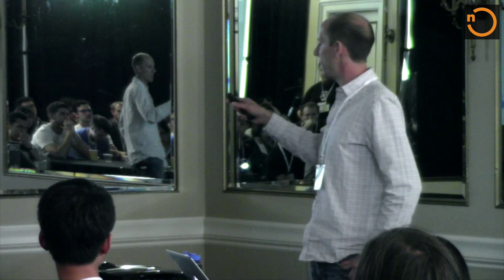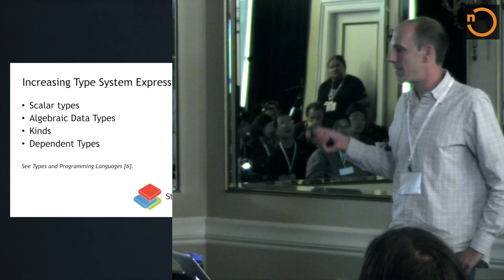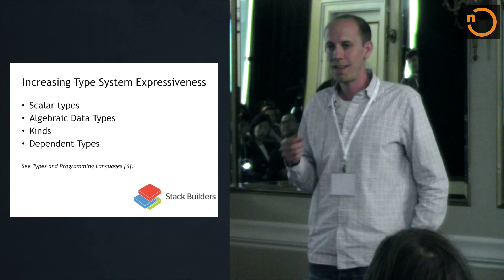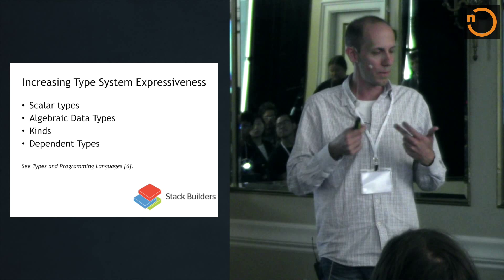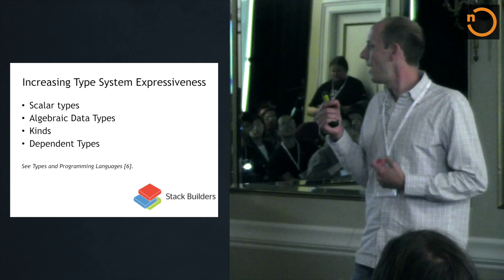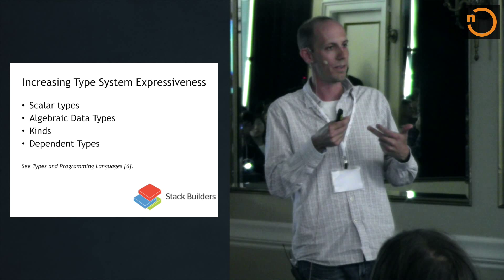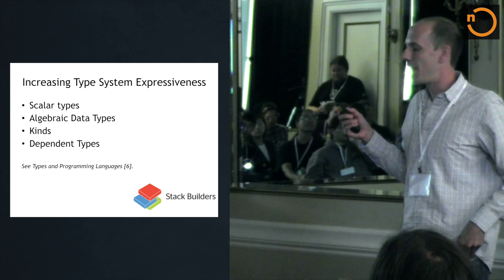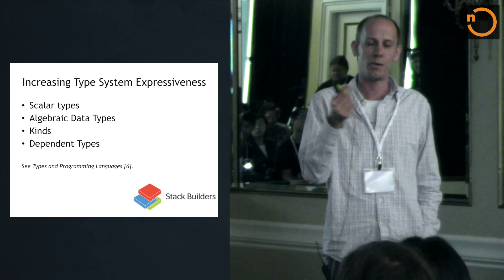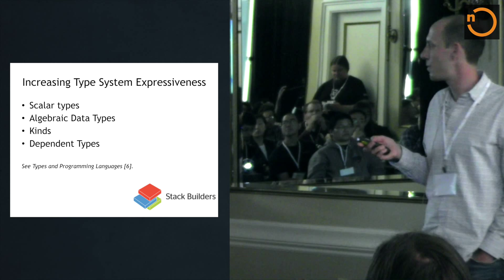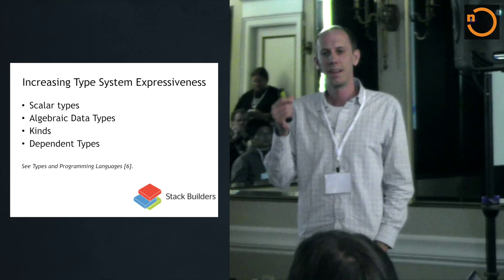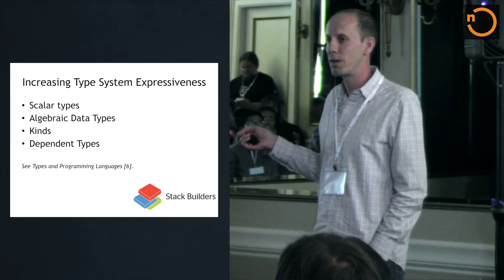This goes into the increasing type system expressiveness I wanted to cover. If you've been using something like Java or C++, we really want to forget everything those type systems give us. They're limited: the type system is not very expressive. We have scalar types — integers, strings, doubles — but they don't have things like algebraic data types. And they're not cheap to use because you have to annotate them all over the place. Whereas in things like Elm and Haskell, you have type inference, so you get that for free — and I believe in Rust as well.